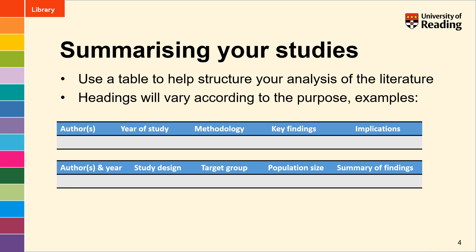Also in your results section you should look to include a table to help you structure your analysis of the studies you have left, and the headings that you use will vary according to the purpose. You need some way of identifying each study — giving the author names and the year. You might look at what methods they used, pick out the key findings, and consider the implications of that study for your review. A second example brings together authors and year in one column, then study design, the target group, population size, and a summary of findings. This is really very individual to your review.